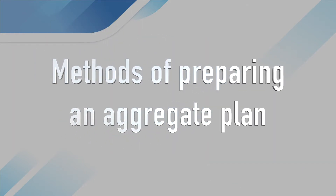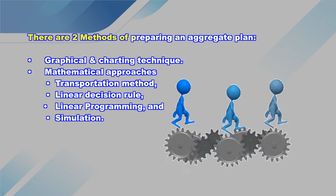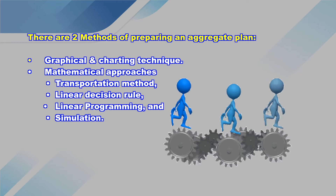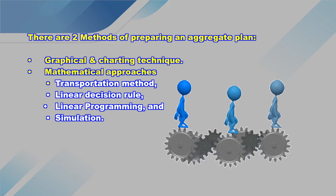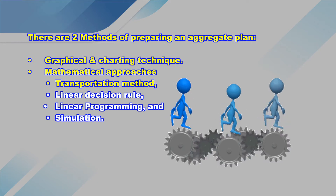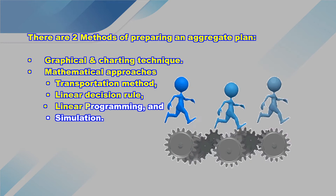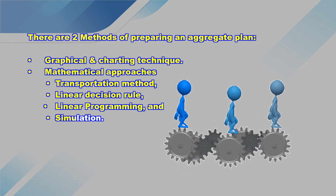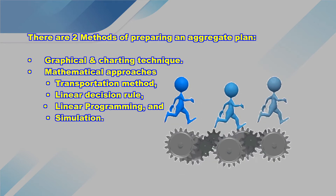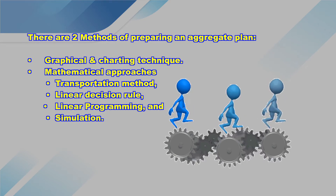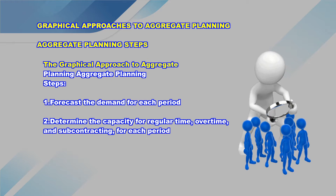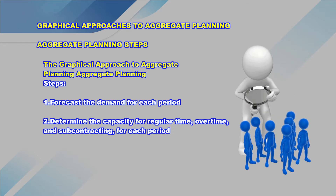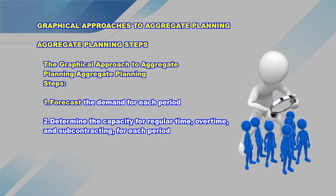Methods of preparing an aggregate plan: there are two methods. Method one is a graphical and charting technique. Method two is the mathematical approach, which includes transportation methods, linear decision rules, linear programming, and simulation. The graphical approach to aggregate planning is simple; the steps involved are given below.